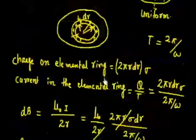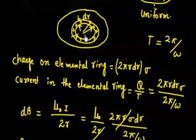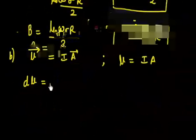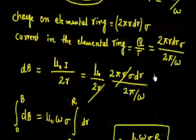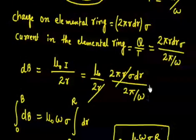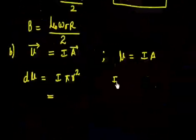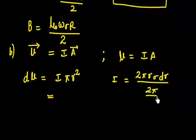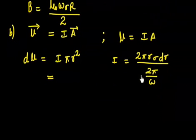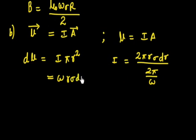For the small elemental current ring, dμ = dI × π·r². The current dI was found to be 2π·r·σ·dr divided by (2π/ω), which gives ω·r·σ·dr. Multiplying by the area π·r², we get: dμ = ω·σ·π·r³·dr.